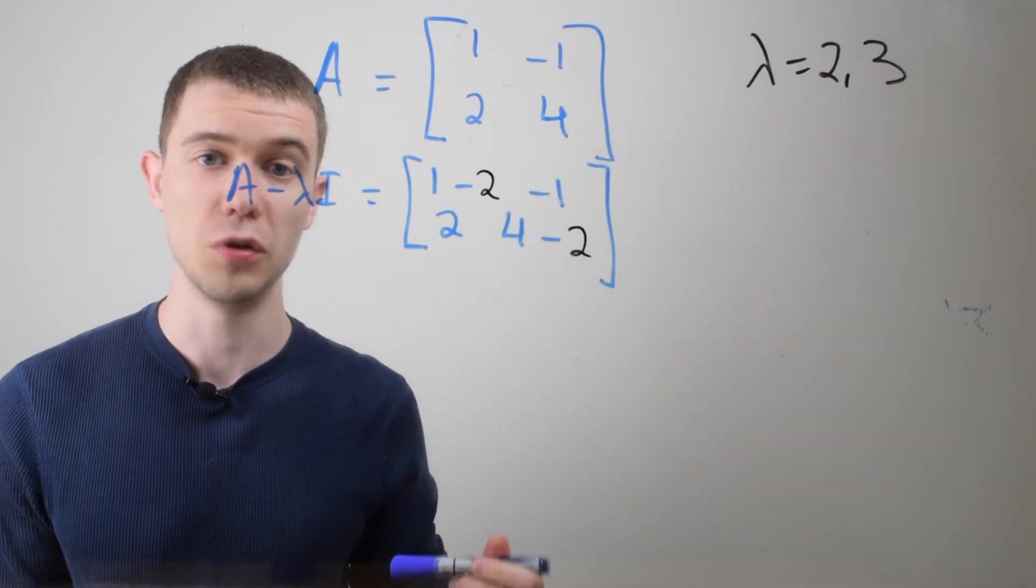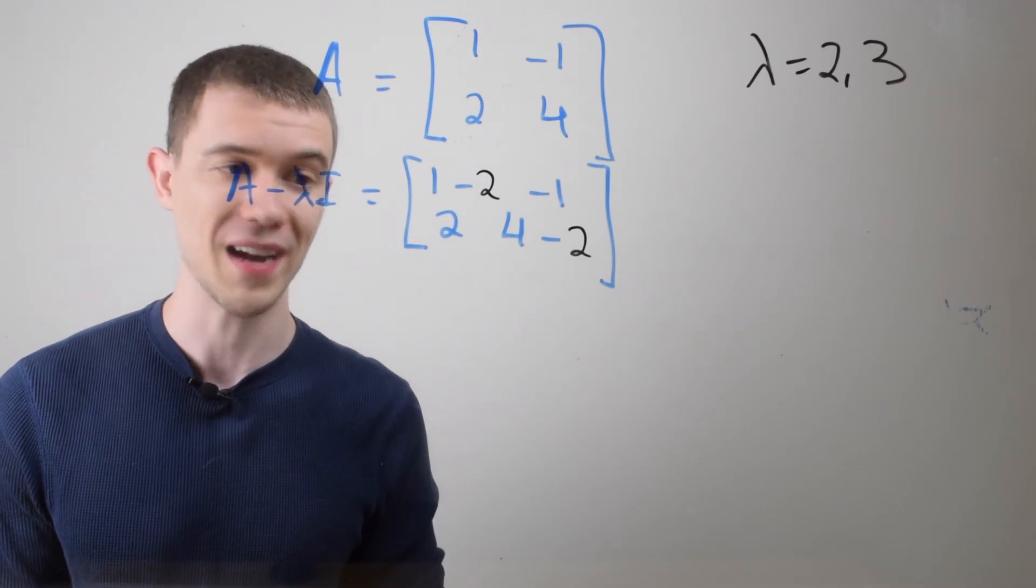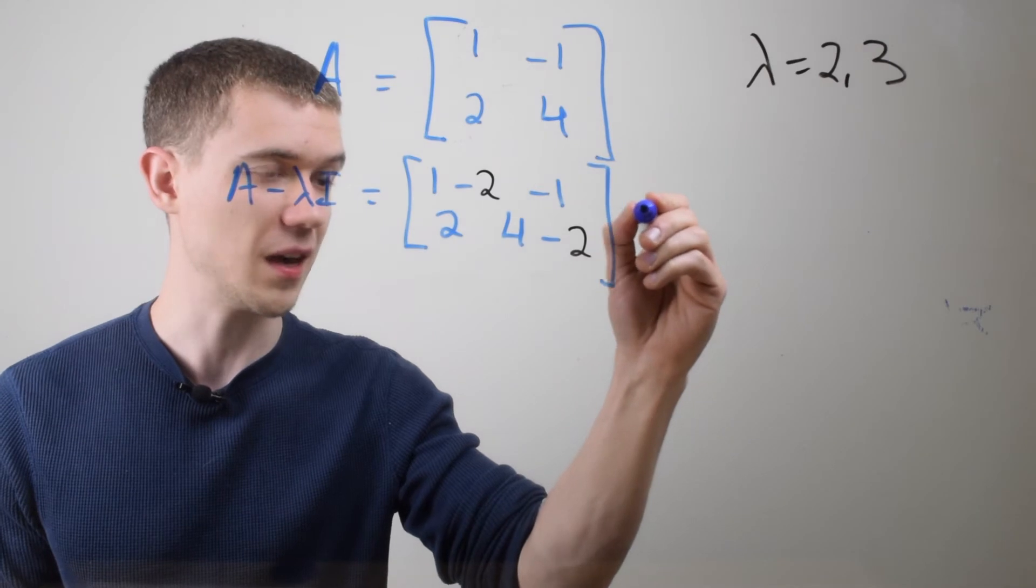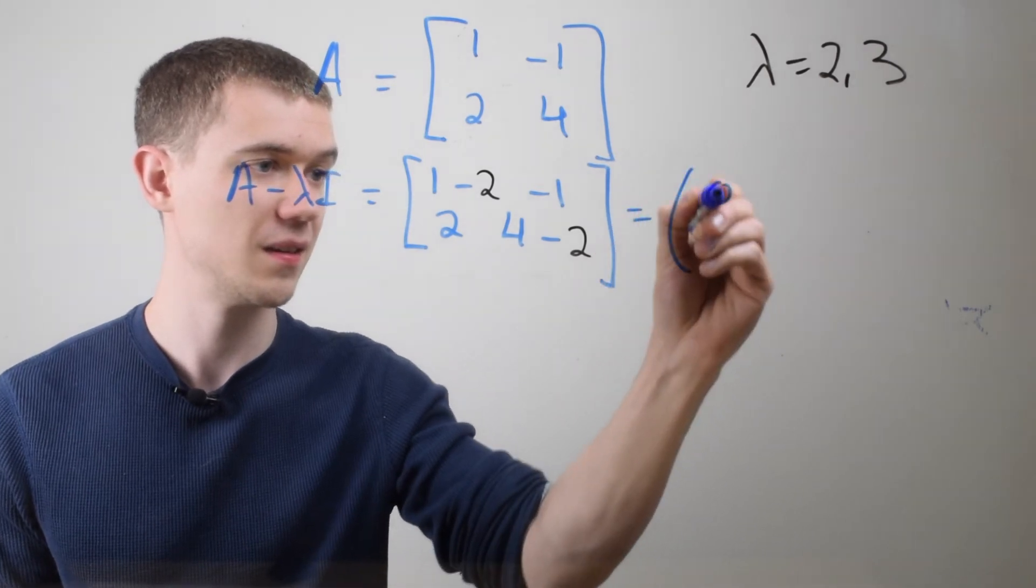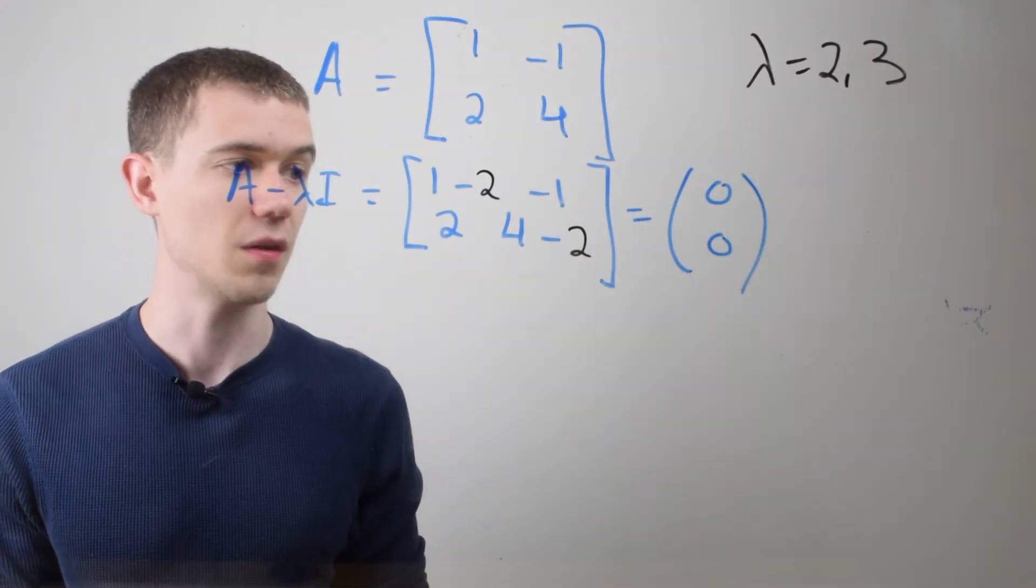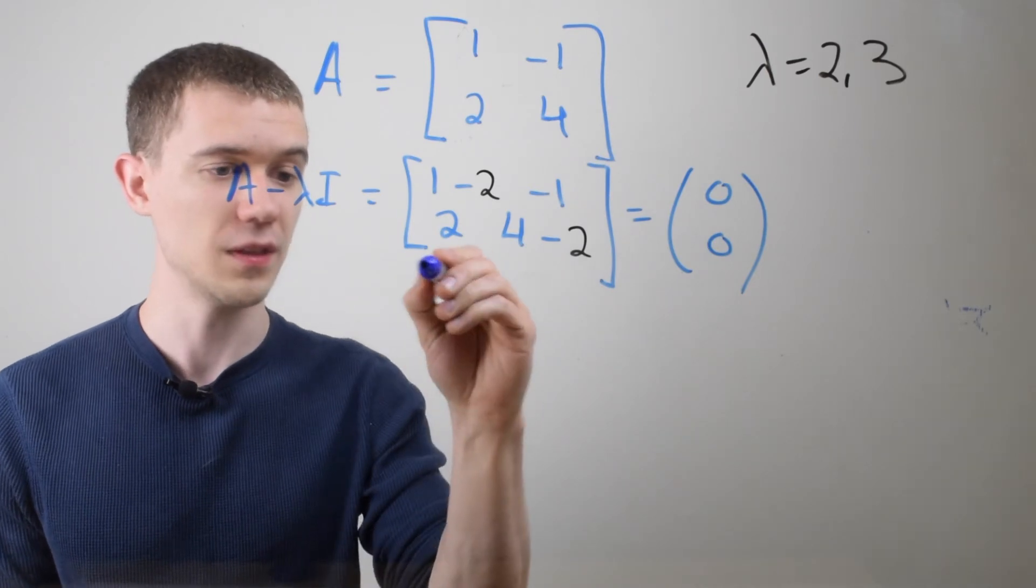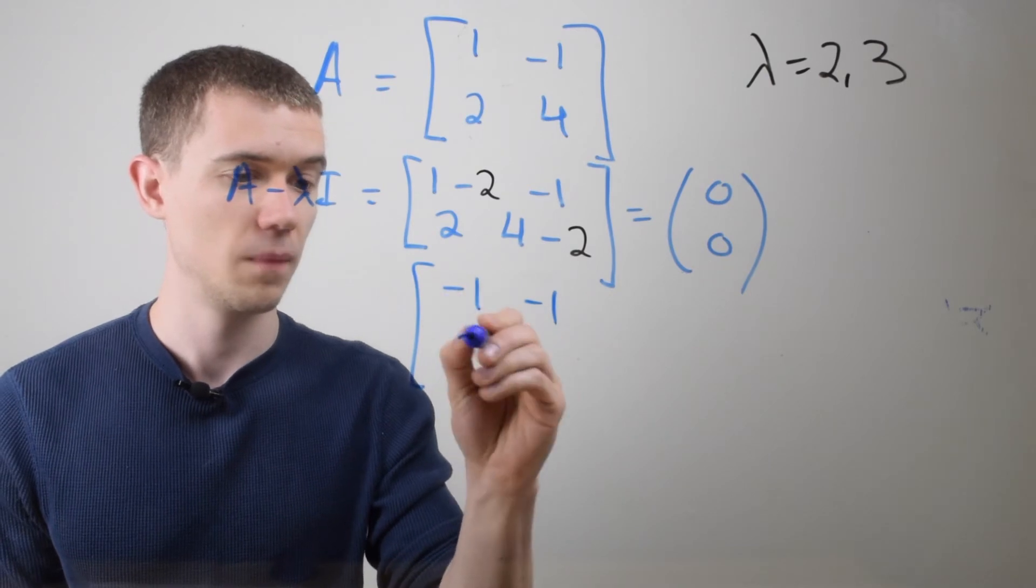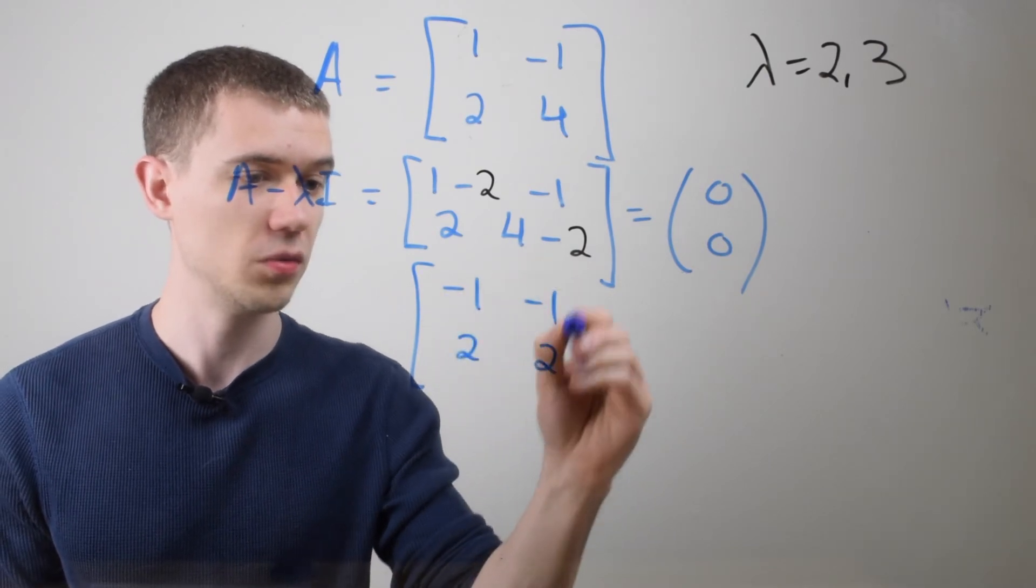So I'm gonna start by substituting my first eigenvalue back into this matrix. And what I'm gonna do is I'm going to set this equal to zero zero. So if I reduce this, if I just clean this up, 1 - 2 is -1. 4 - 2 is 2.